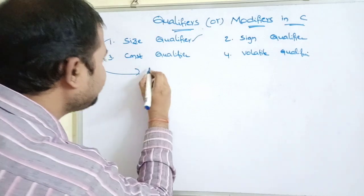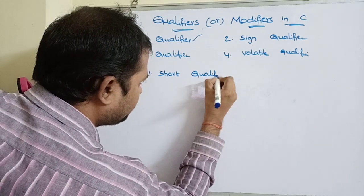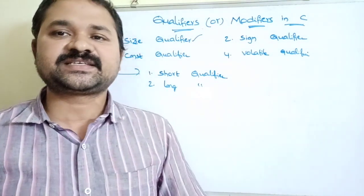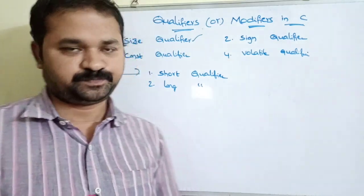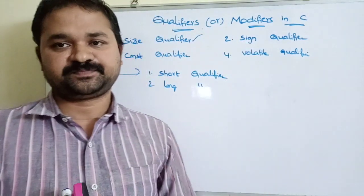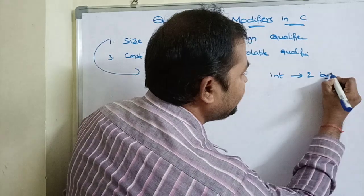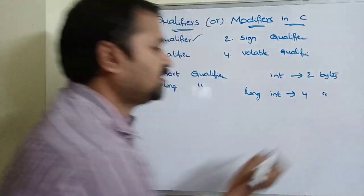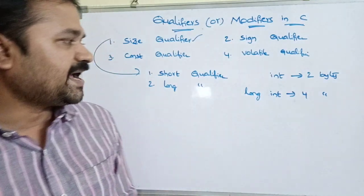The first size qualifier is the short qualifier, and the second is the long qualifier. Short qualifier reduces the size of the basic data type or keeps the size as it is, whereas the long qualifier increases the size of the basic data type. For example, if the size of an integer is two bytes, then the size of a long int will become four bytes.